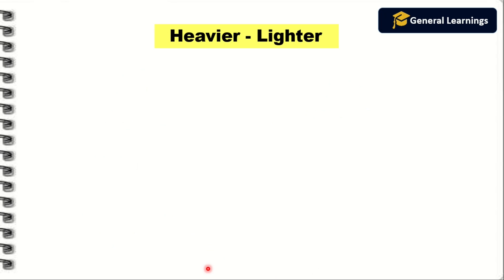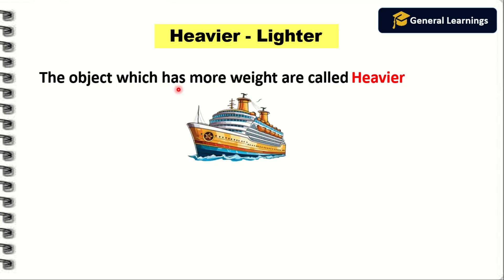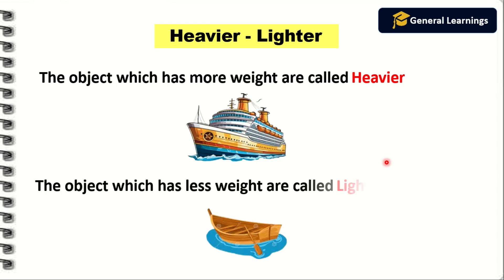Next we are going to see heavier and lighter. The object which has more weight is called heavier — the object whose weight is more will be called heavier. For example, they have given a ship, and the weight of a ship is more, so a ship is a heavier object. The object which has less weight is called lighter. Here they have given a boat — comparing to a ship, the boat's weight will always be less, so the boat is called a lighter object.